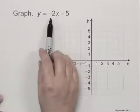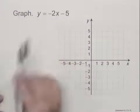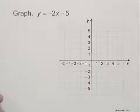Graph y equals negative 2x minus 5. We'll find some ordered pairs that are solutions, plot them, and then draw and label the line.